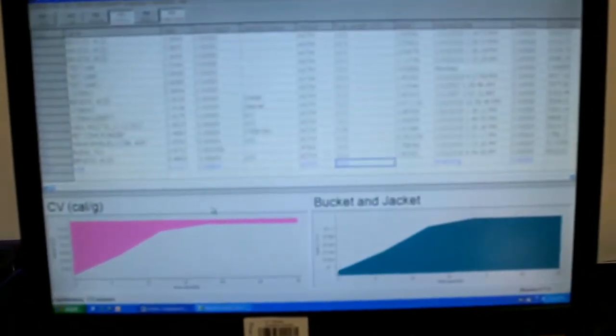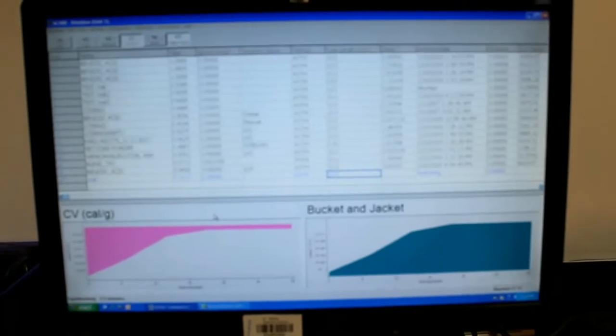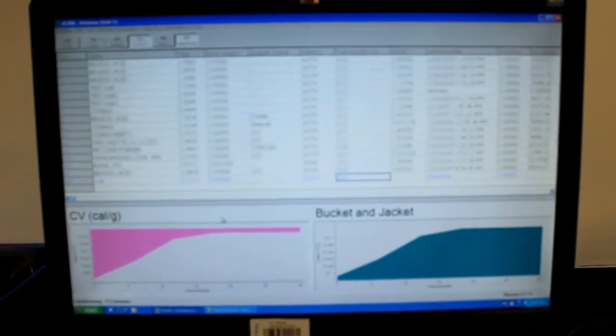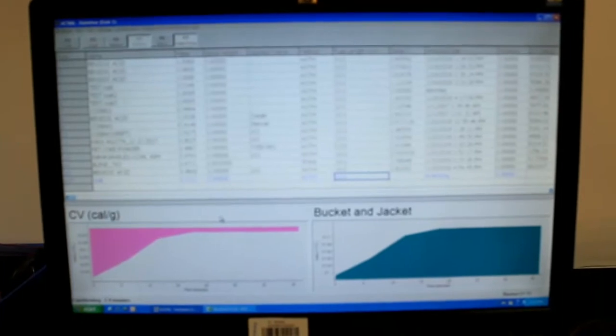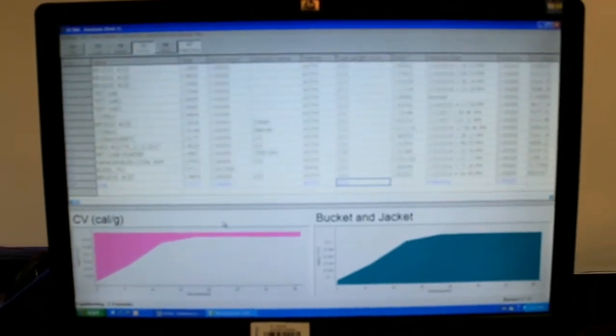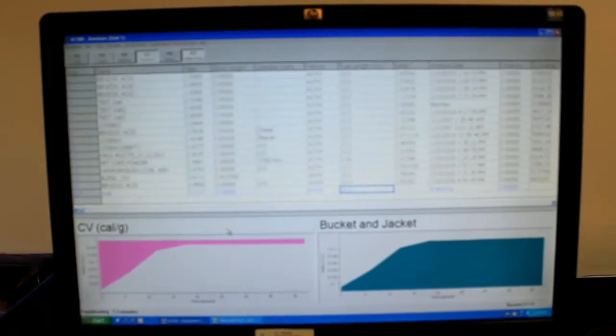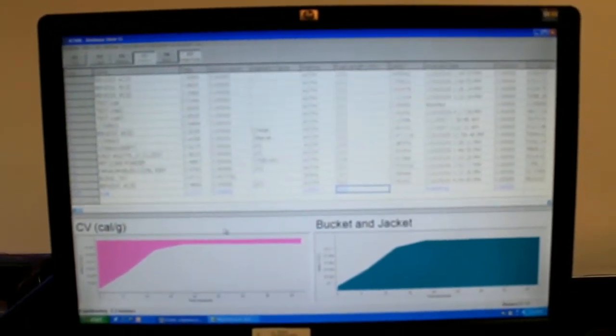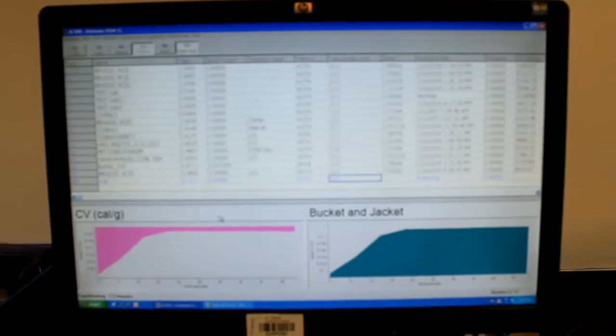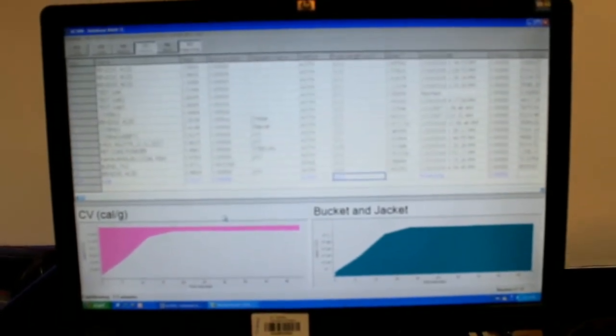The calorific value of the sample is determined by combustion of the sample in a controlled environment. Which I told you earlier, we have two thermistors in the instrument. One is used for bucket and another is used in a jacket. So in this 3 minutes, both the temperature it matches. That is, plus or minus 1 degree of tolerance.